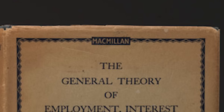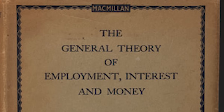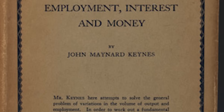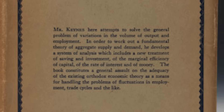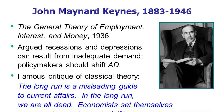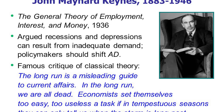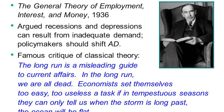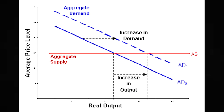Keynes' landmark work, The General Theory of Employment, Interest and Money, published in 1936, was the strongest theoretical justification for government intervention in the economy the world had ever seen, and was a how-to guide for lifting economies out of recessions. Keynes began with the radical argument that classical models of economics were only applicable to a special case of circumstances, while his own models constituted the general case. He argued that aggregate demand was the most important variable determining economic activity, and that insufficient demand could lead to high unemployment, recessions, and depressions.